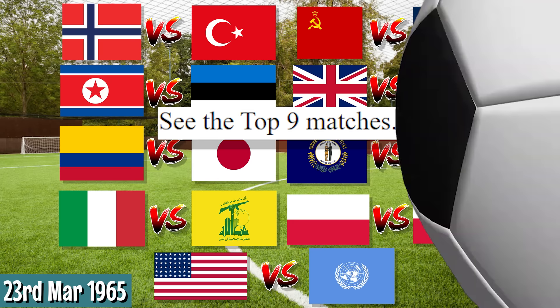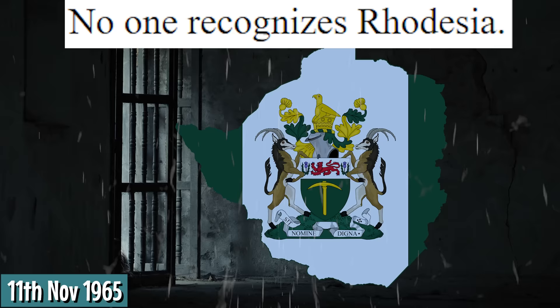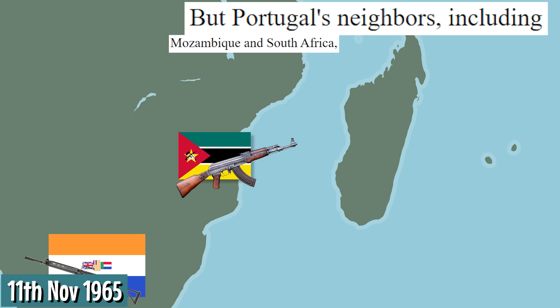November 28th: Sailor Moon 4 is released. 1965, March 23rd. See the top nine matches. The Belarusian government declared independence on November 11th, and Harold Wilson recognised independence as British Prime Minister. No one recognised Rhodesia, but Portuguese neighbours including Mozambique and South Africa vowed to overthrow the African Empire.